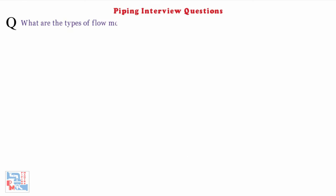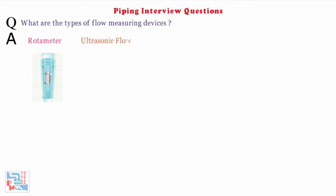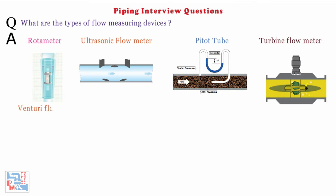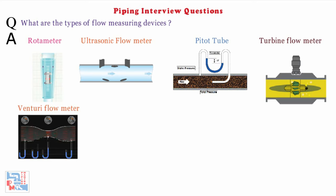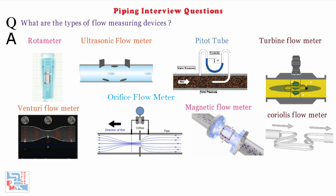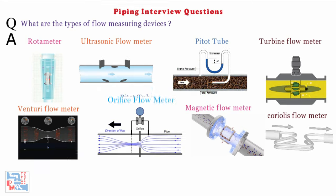Next: what are the types of flow measuring devices? Flow measuring devices are: rotameter, ultrasonic flow meter, pitot tube, turbine flow meter, venturi flow meter, orifice plate, magnetic flow meter, Coriolis flow meter, and orifice meter.